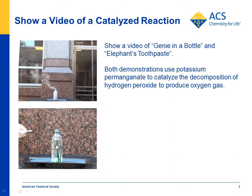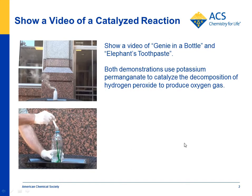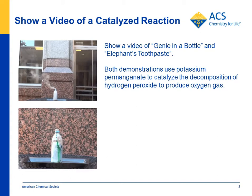The next one is called Elephant's Toothpaste. Again, there's concentrated hydrogen peroxide in the bottom, a couple drops of detergent solution, and a little bit of food coloring dripped on the side of the bottle. The potassium permanganate is added, and instead of shooting steam into the air, the oxygen is trapped in bubbles formed because of the detergent, and you get this snaky, foamy stuff they call Elephant's Toothpaste.